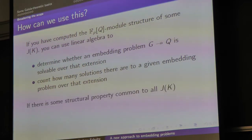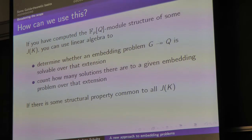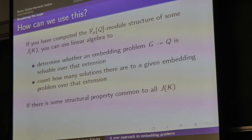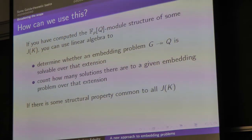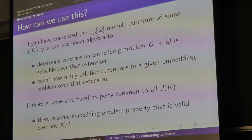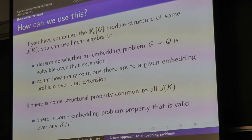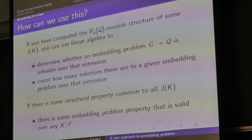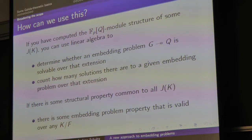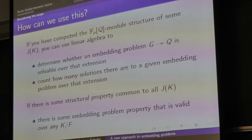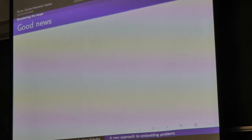I want to focus on a different question. If there is some unexpected structural property common across all J of K — so for every K — then there is some unexpected property about embedding problems as well. I wouldn't say yes, unless there were some magical property common to all the J of K's.